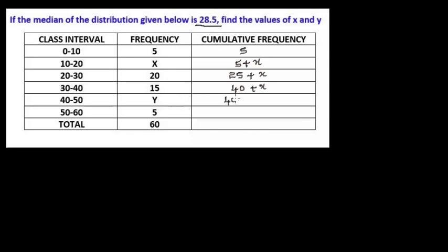Next, 40 plus x plus y — since x and y are unlike terms, the result is 40 plus x plus y. Then 40 plus x plus y plus 5 equals 45 plus x plus y. This cumulative frequency 45 plus x plus y must equal the total frequency n, which equals 60.